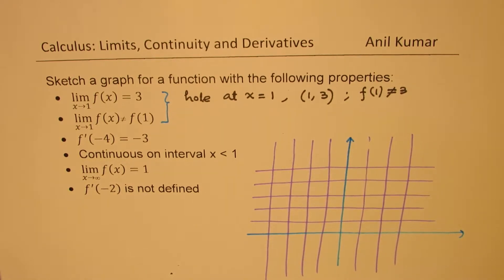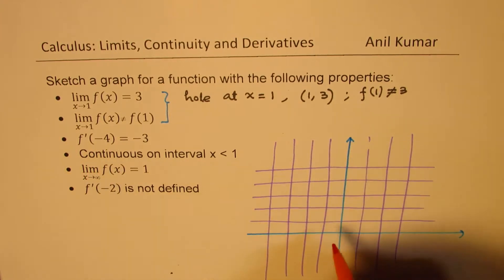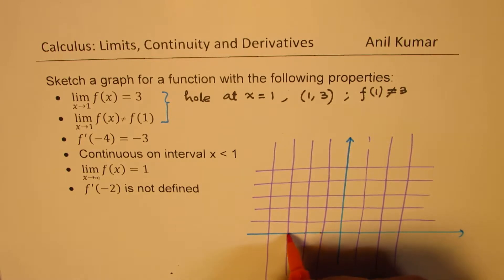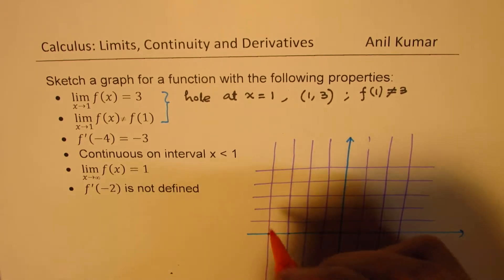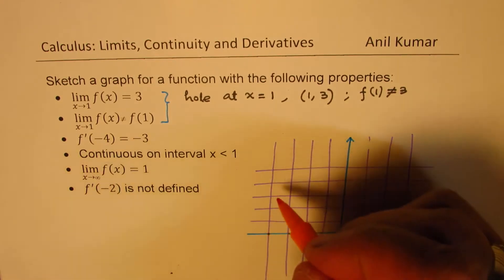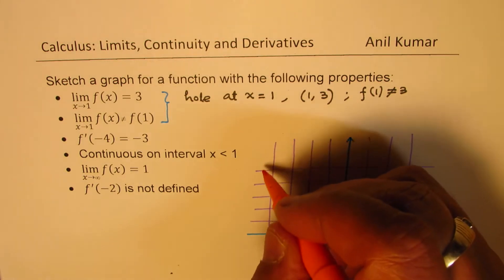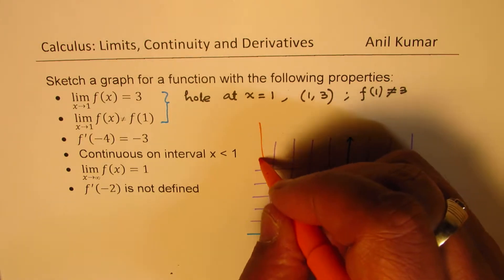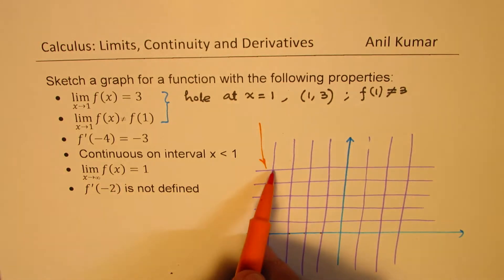So what is given to us in the third condition is that the slope at minus 4 is minus 3. So this is minus 1, minus 2, minus 3, minus 4. The slope is minus 4, so it is kind of coming downwards. So the slope is kind of like this in this area.